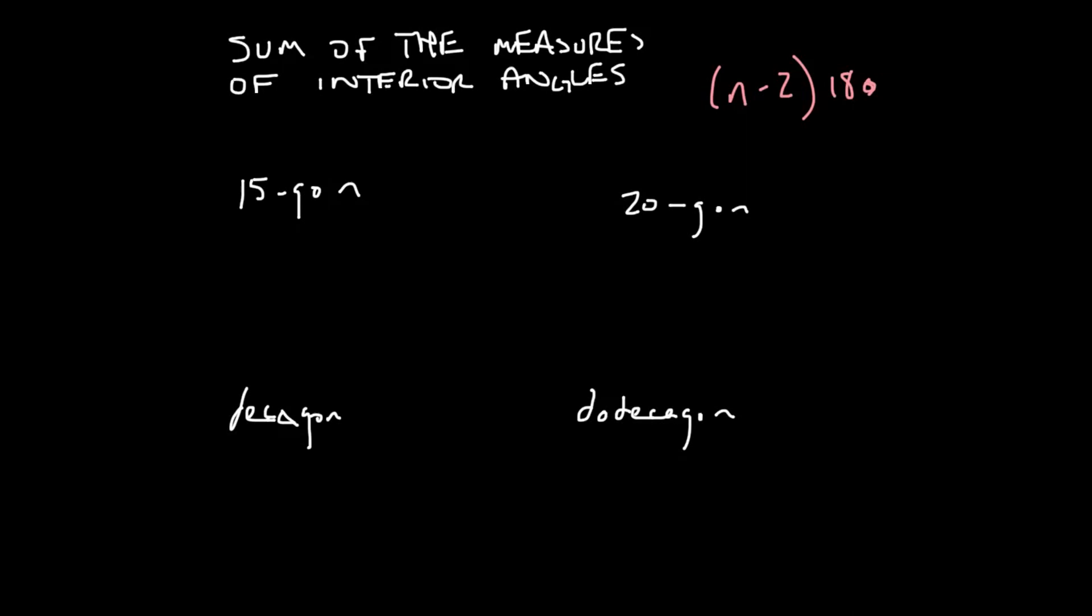Today we're learning about the sum of the measures of interior angles of different size polygons. What does that mean? It means sum means it's added up the measures of all these polygons. So, like essentially if you have a triangle, you know that those angles inside there add up to 180 degrees.